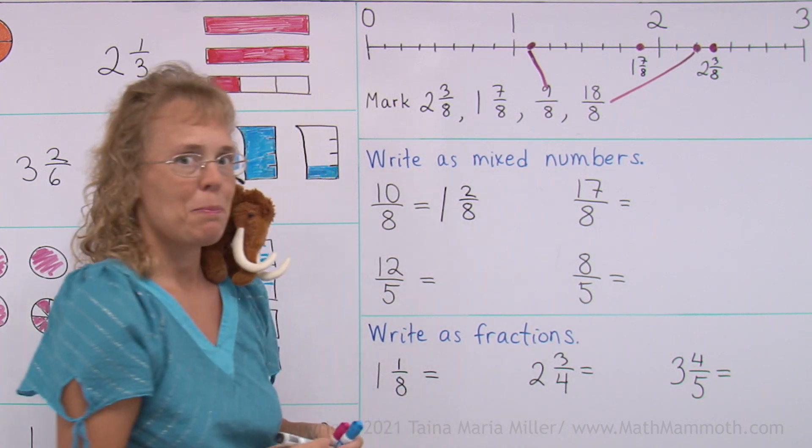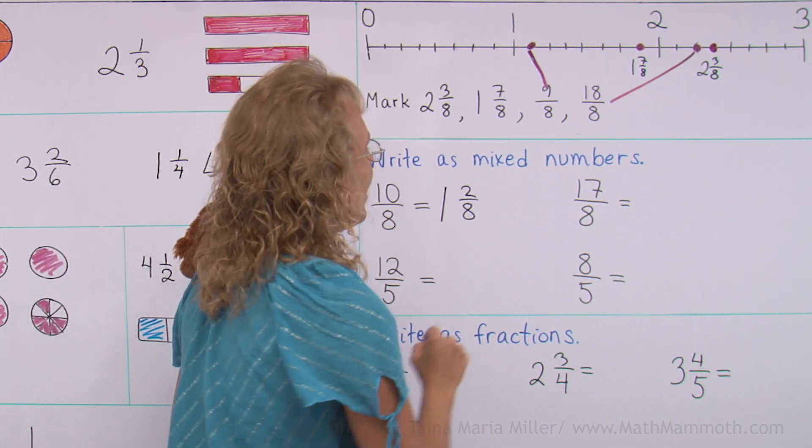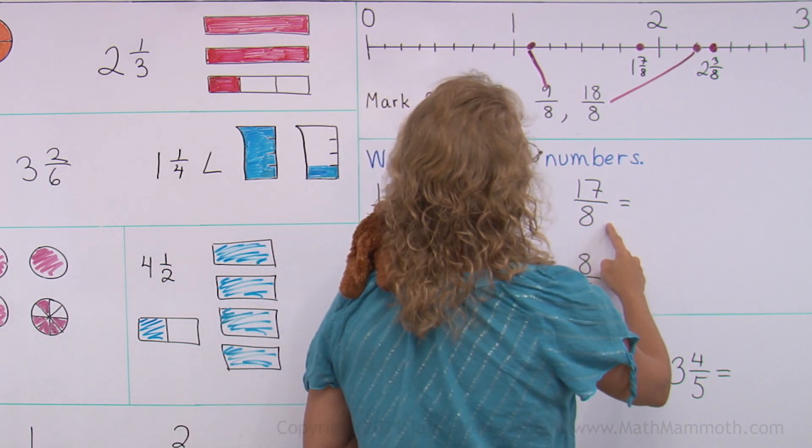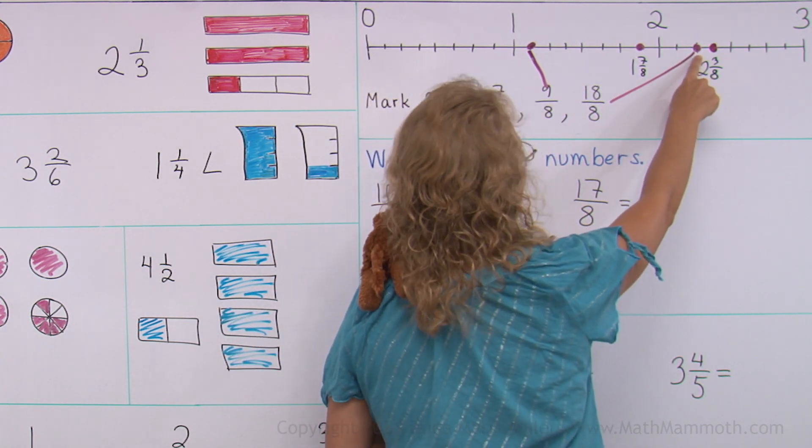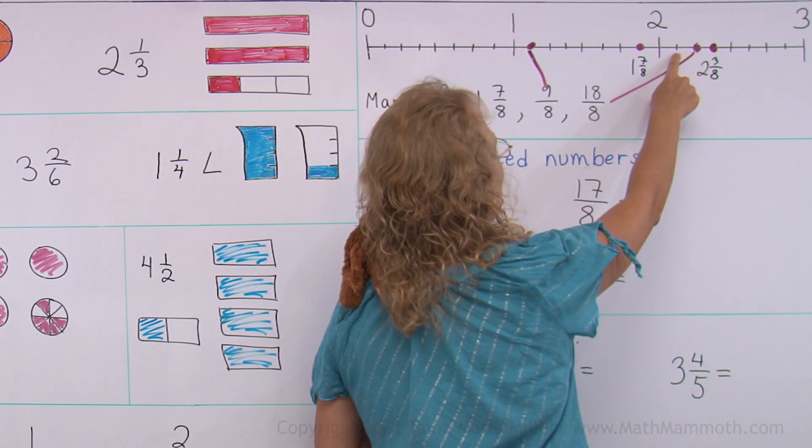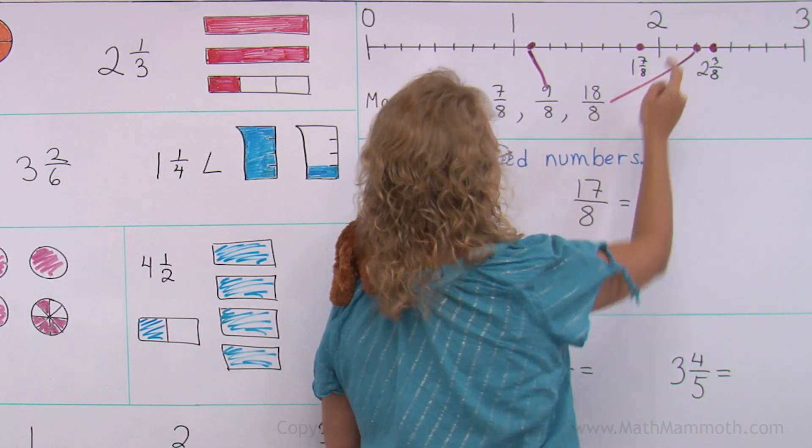How about 17 eighths? You could again use the number line over here, 17 eighths. Look, we marked 18 eighths. 17 eighths is just one tick mark before it, right here. So it is 2 and 1 eighths.